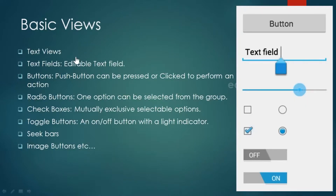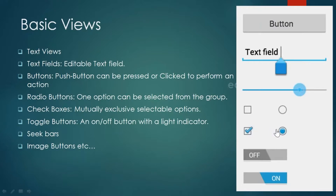The basic views available in Android include TextViews, EditText (text fields), Buttons, and SeekBars — which you often observe in music player applications. CheckBoxes appear in registration forms where you can select multiple options at a time, so we call them multi-selectable options. Radio buttons are used where only one option can be selected, like choosing gender in registration forms — we call these single-selectable options.